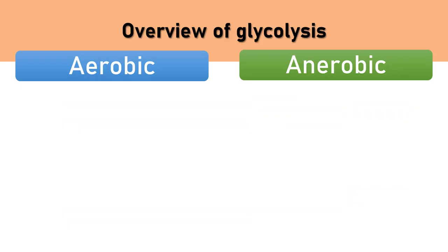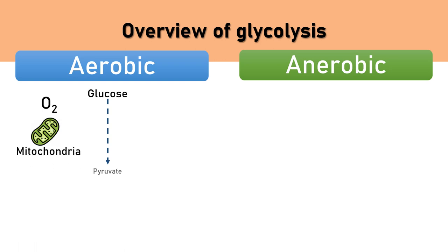Glycolysis can be carried out aerobically and anaerobically. In the presence of oxygen and mitochondria, glucose converts into pyruvate. This pyruvate is then transported into the mitochondrial matrix where it undergoes oxidative decarboxylation and converts to acetyl-CoA. This acetyl-CoA then takes part in the TCA cycle, where the complete breakdown of glucose into carbon dioxide takes place.